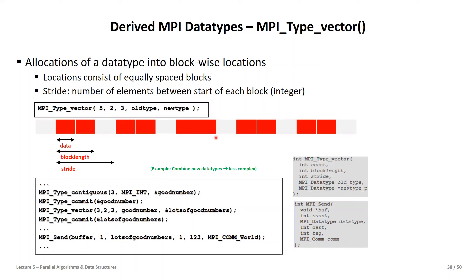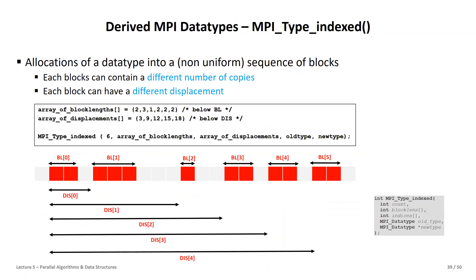You can build derived data types on top of other derived data types — they build on each other because they are just data types. So instead of using MPI_INT as the old type, you can use an already-derived type to create an even more powerful one. Then in MPI_Send, instead of many lines of code sending different integers, you can send lots of 'good_numbers' in one call. This simplifies code readability, performance, and communication overhead significantly.